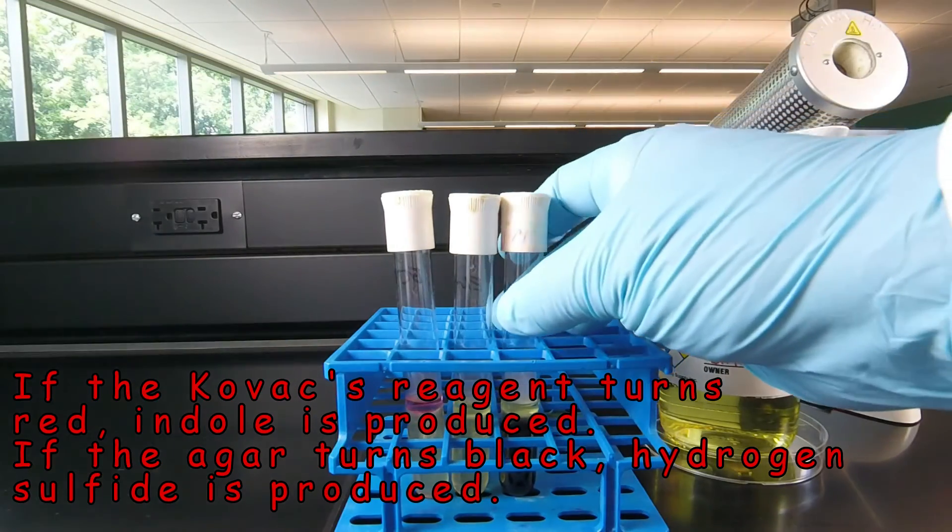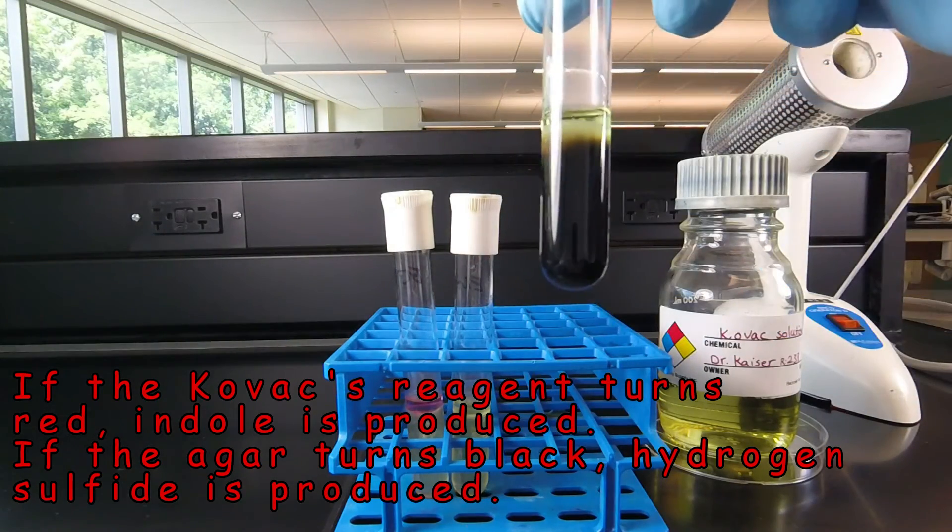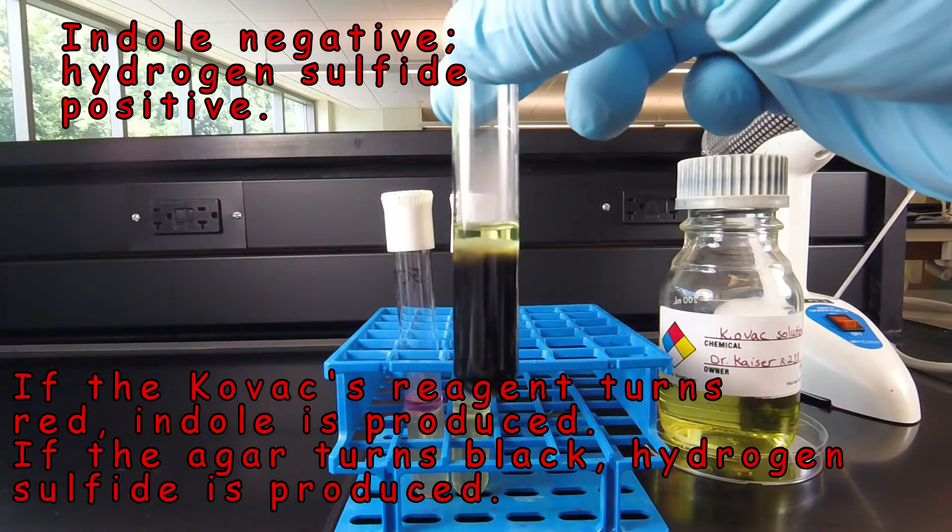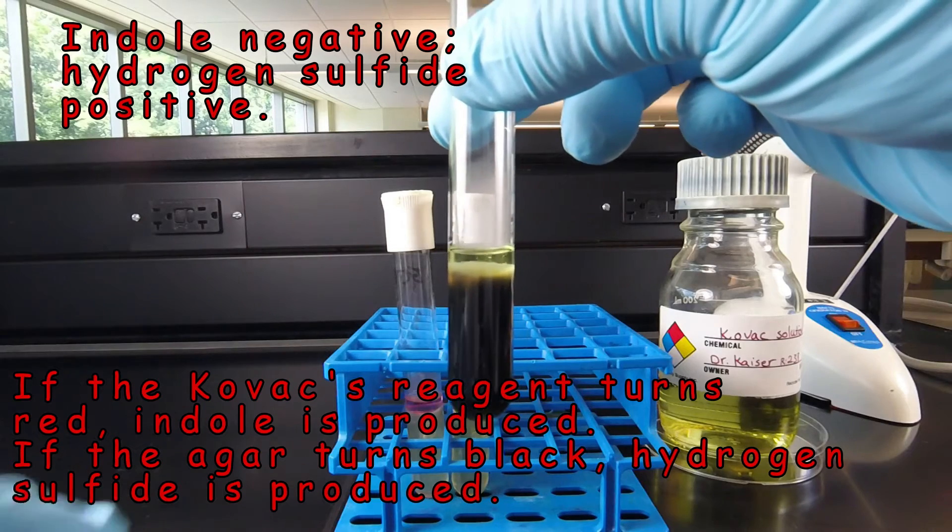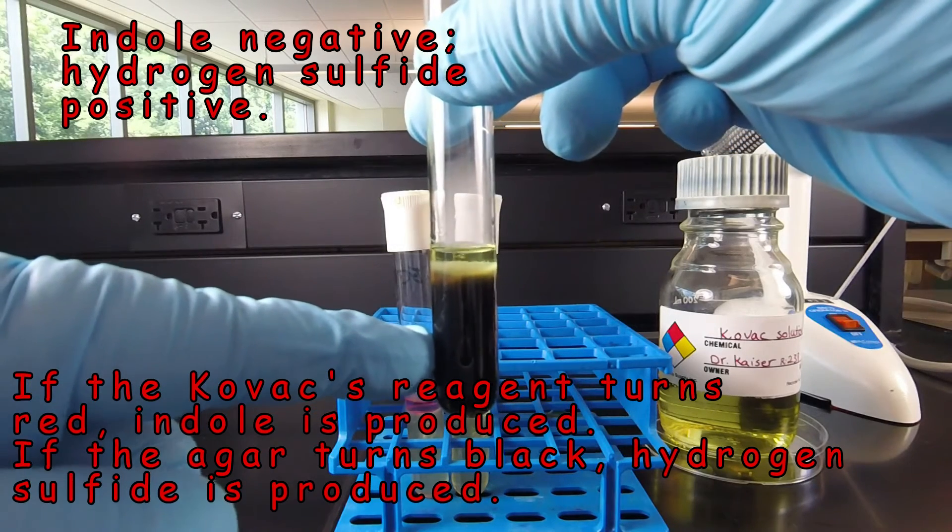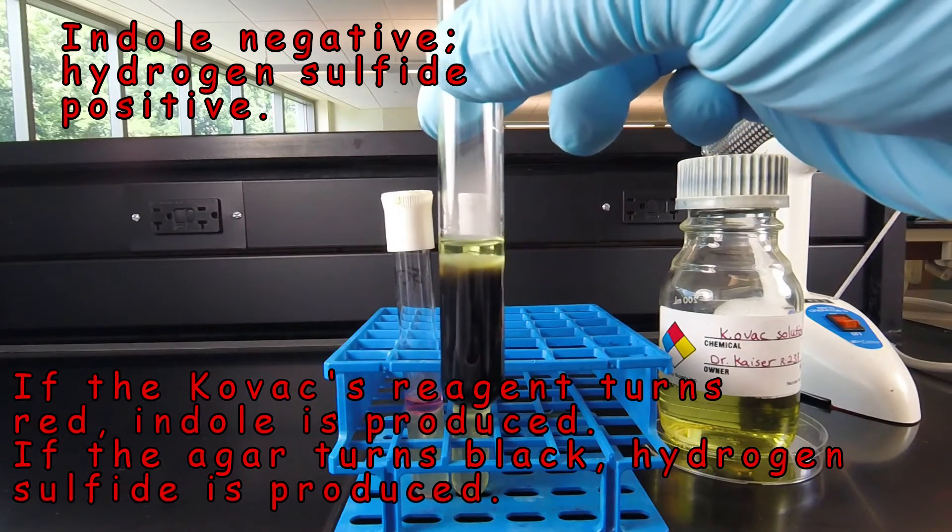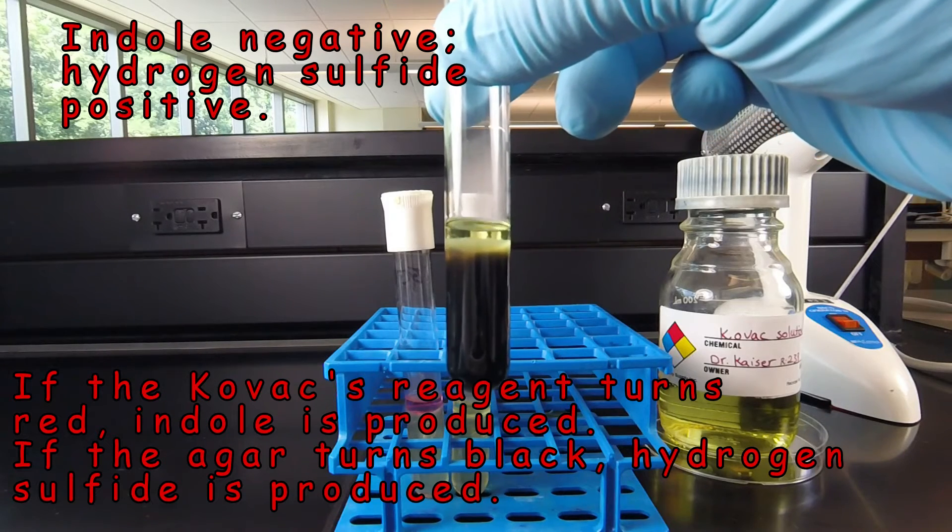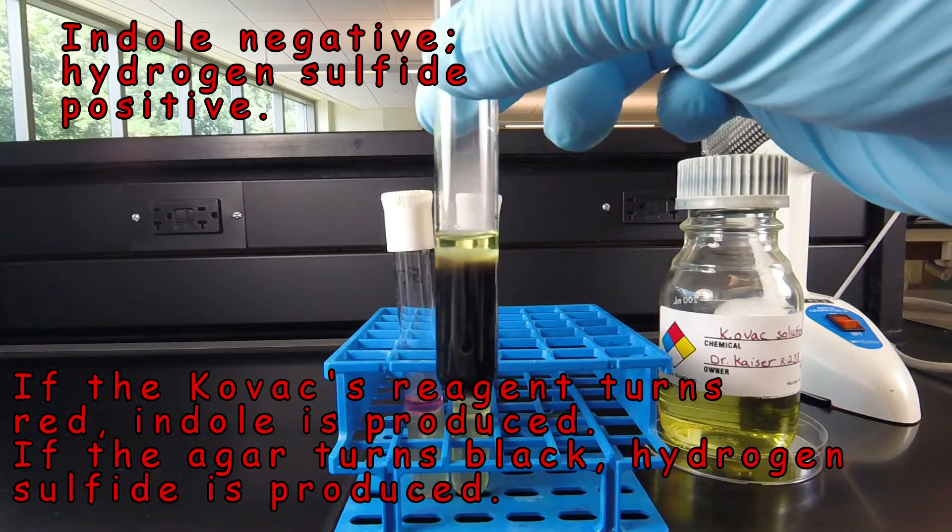On the other hand, in this tube, the bacterium did not produce indole as shown by the fact that the Kovac's reagent on top remains yellow. But hydrogen sulfide was produced as indicated by the black color. So this bacterium is indole negative and hydrogen sulfide positive.